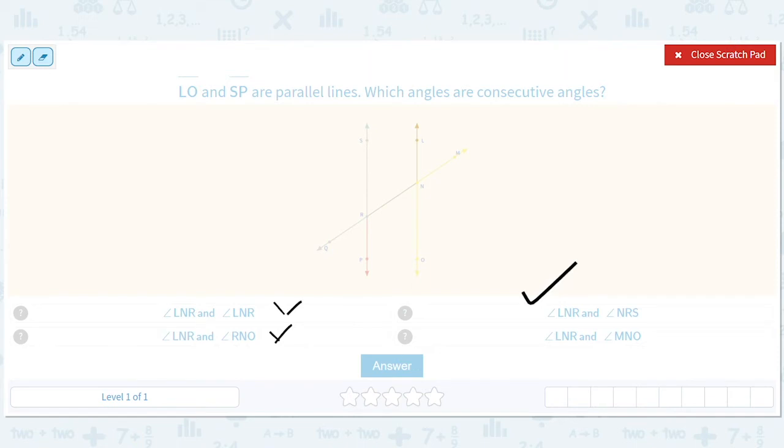And so no, no, yes. LNR and LNR and LNR. I think that's an MNO. Yep. No, those are vertical, right. They're opposite each other. So it's only LNR and NRS.